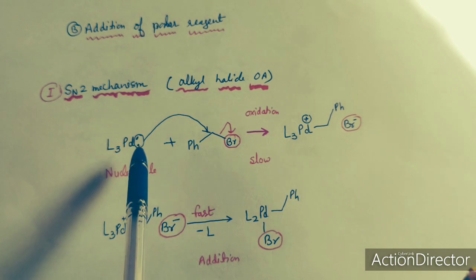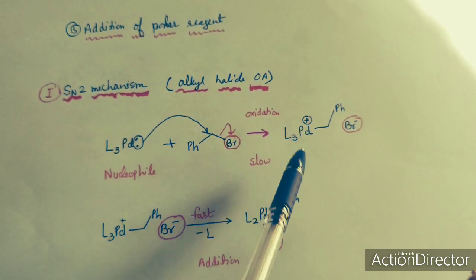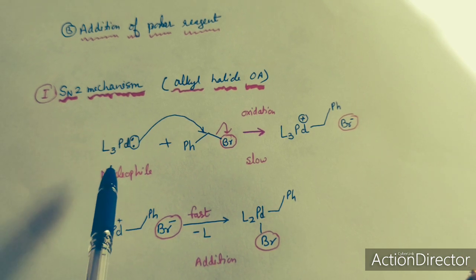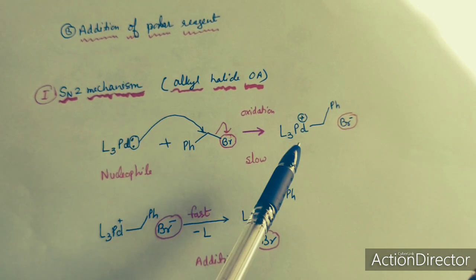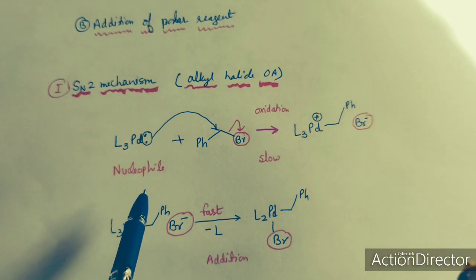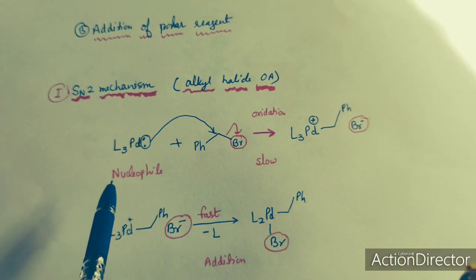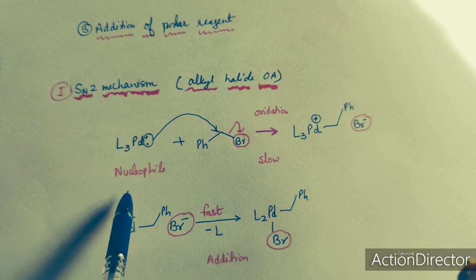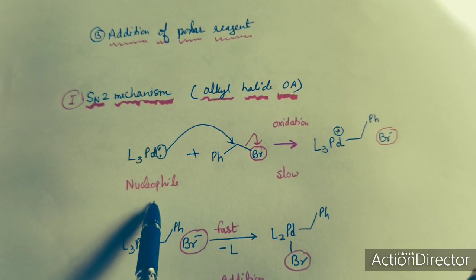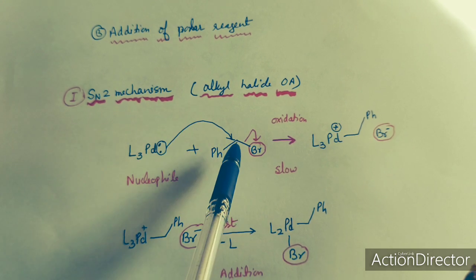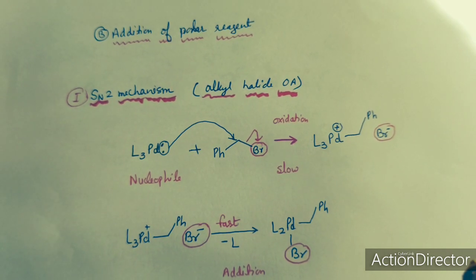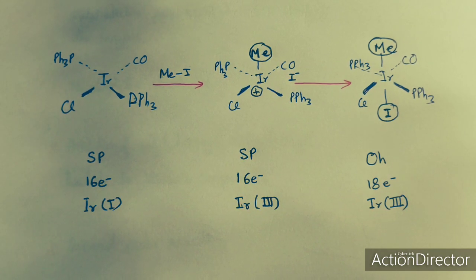The electron count increases because bromine donates its electrons, and the oxidation state also increases. It is therefore an oxidative addition reaction, but the mechanism is SN2 because the metal complex acts as a nucleophile and favors nucleophilic attack on the organic halide molecule.